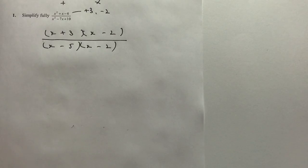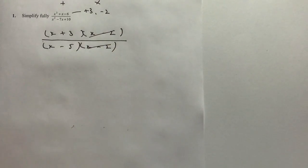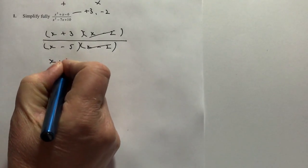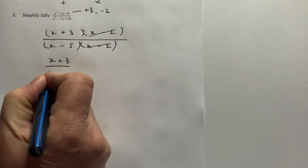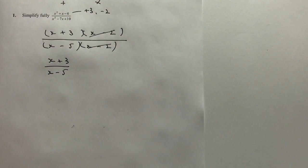If we have a look at this particular fraction, it then allows me to cancel out the x minus two terms and I can rewrite the fraction in its simplified form as x plus three divided by x minus five. And actually that's the end and that's the answer to this particular question.